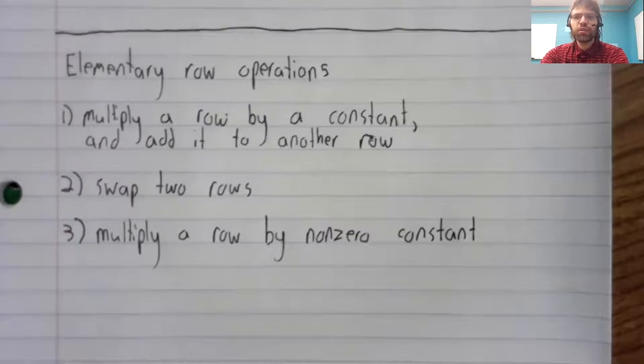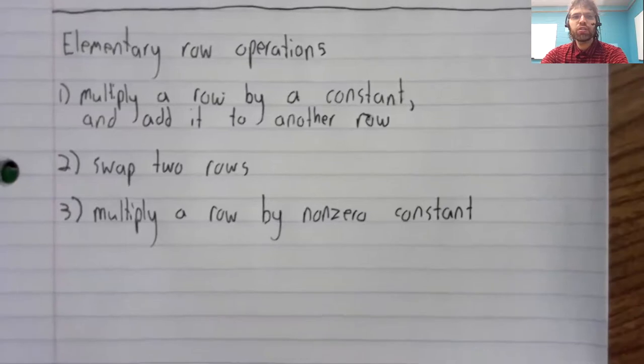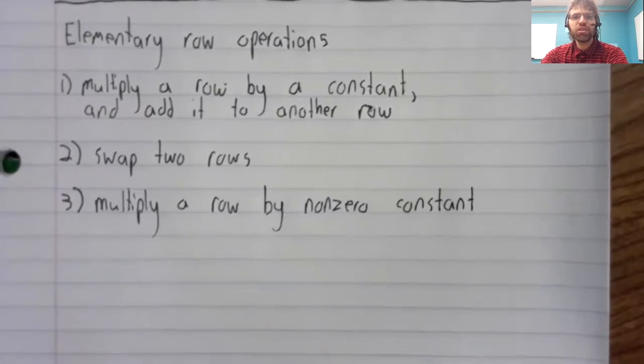Finally, I said we could multiply an equation by a nonzero constant. Now I'm saying the same thing about rows of matrices.